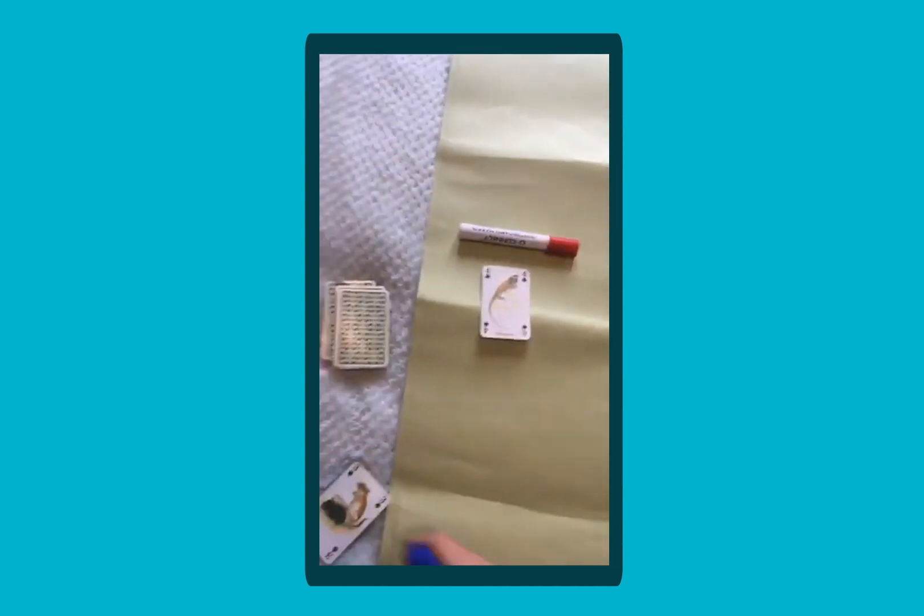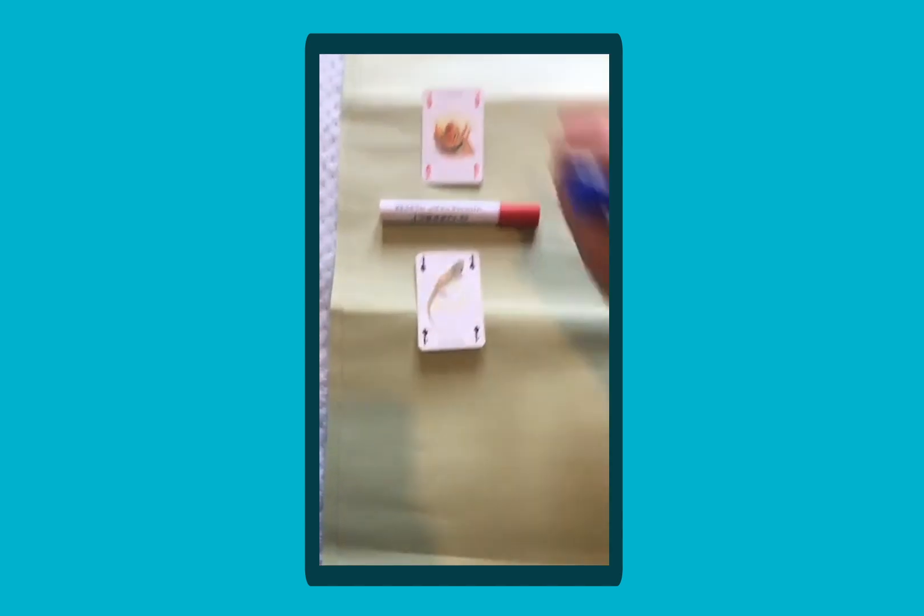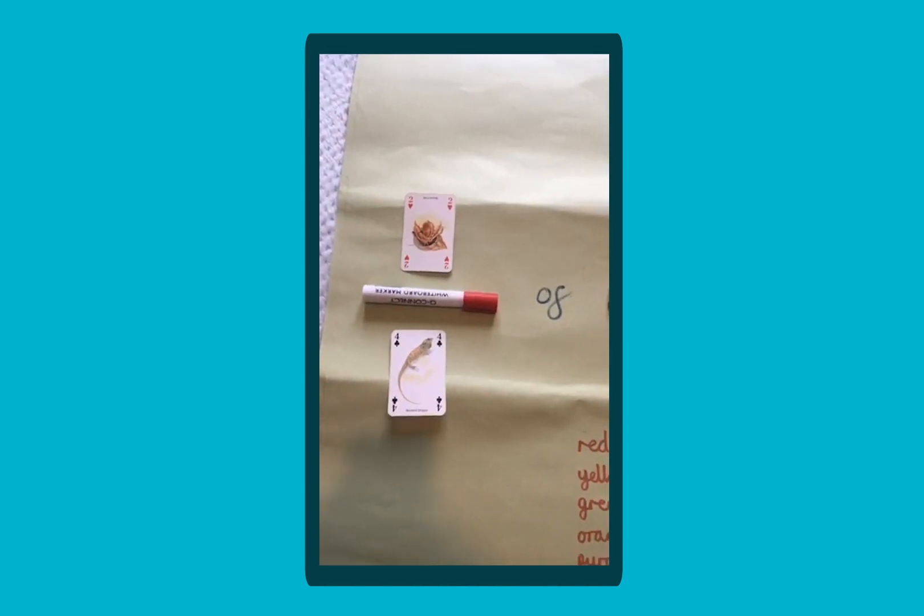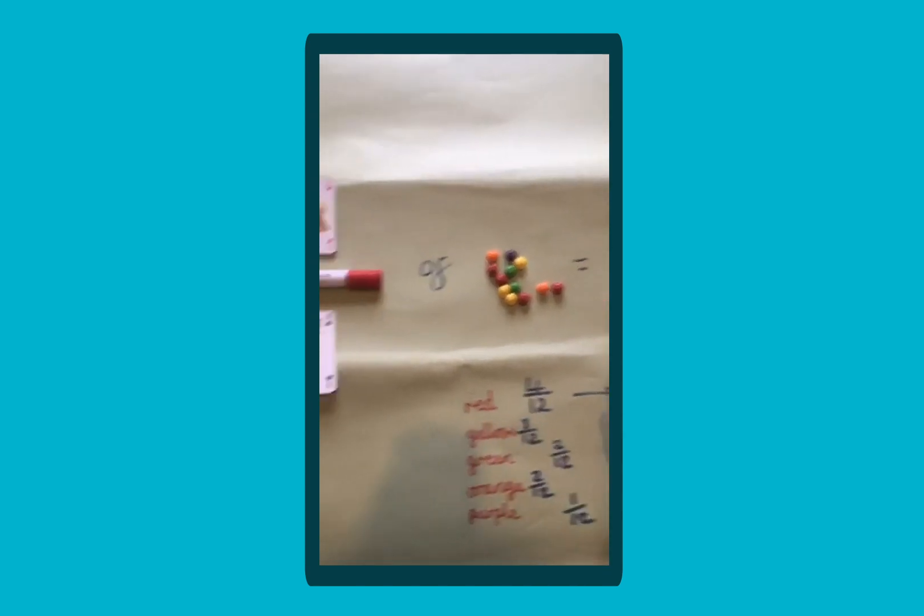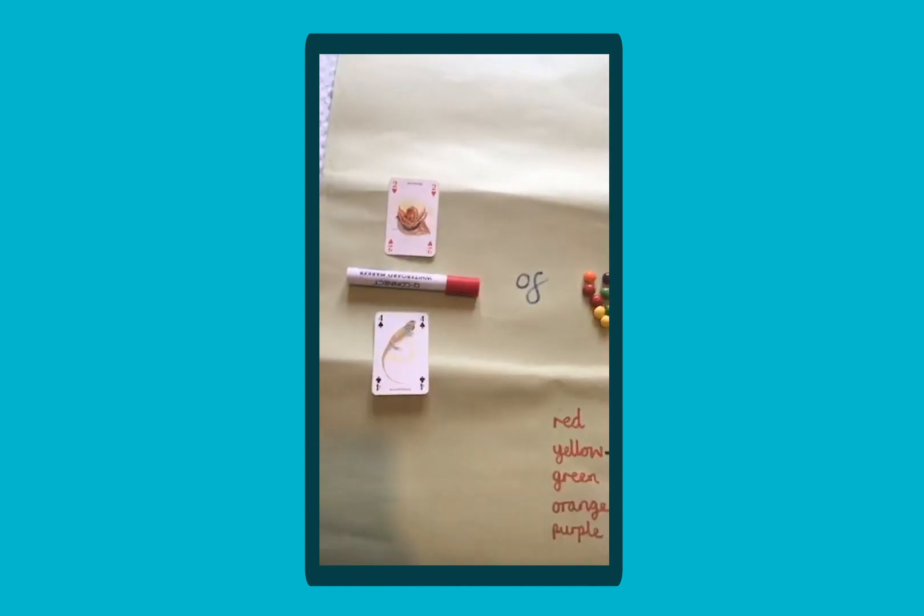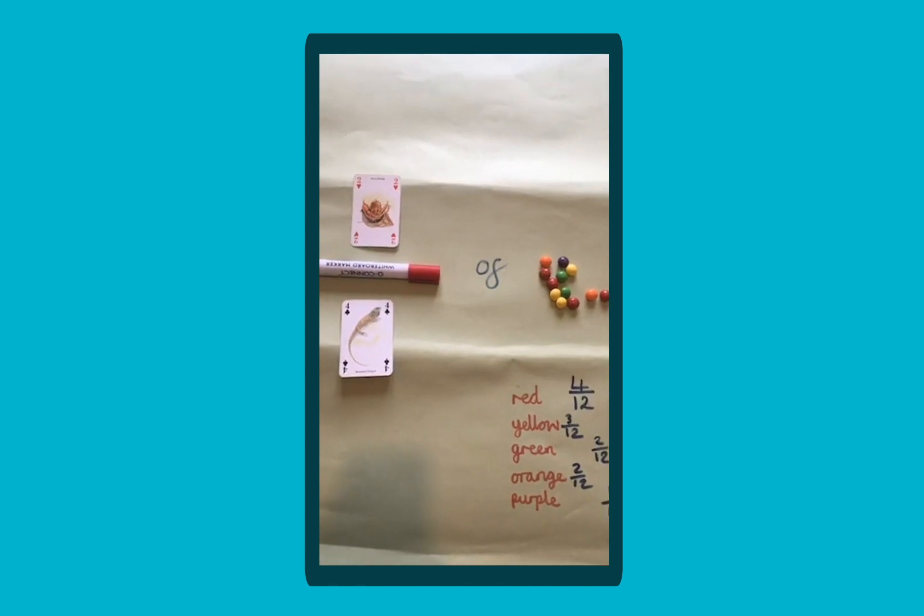So let's take away our numerator and you can change it for another one. Here we have two quarters of our 12 sweets and put your answer in again. Divide by the bottom, times by the top to find that fraction of the amount.